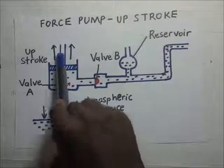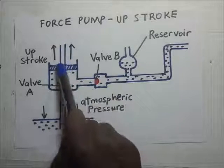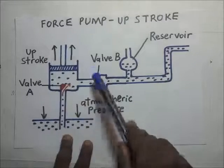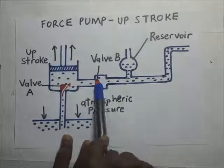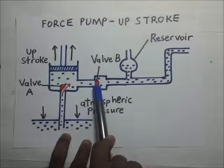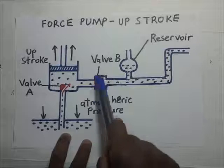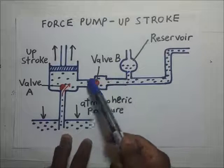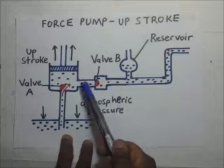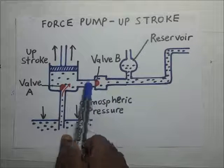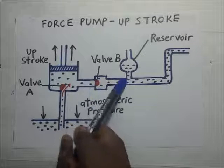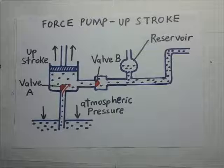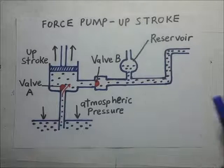However, as this is happening because of this piston being pulled up, what happens to valve B? Valve B is going to drop and close. It will fall down by gravity because there is no more pressure that is forcing it to stay open. So those are the two things that happen during the upstroke.